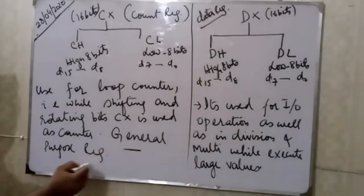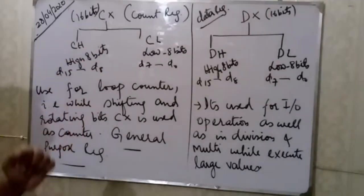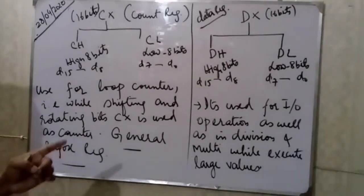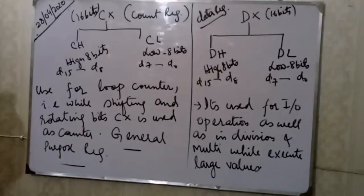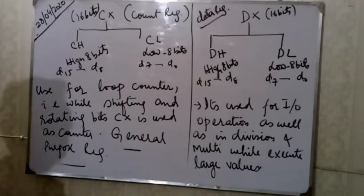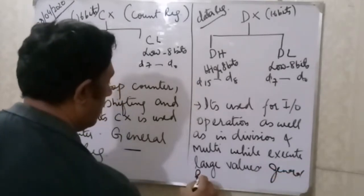DX is the data register. It is again a general-purpose register. DL is the low 8 bits from D0 to D7, and DH is the high 8 bits from D8 to D15. DX is used for input/output operations as well as in multiplication and division when handling large values.